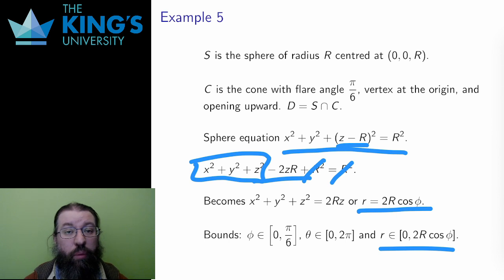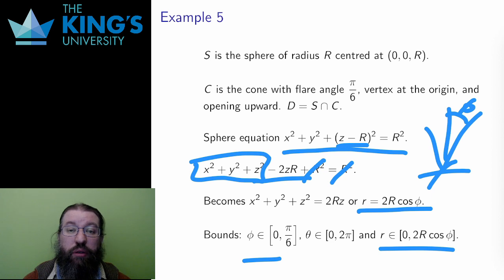Then the cone. Thankfully, the cone matches up very nicely with spherical coordinates. A cone with its vertex at the origin pointing up is precisely the figure where φ is constant. I said the flare angle was π over 6, so I can take φ from 0, starting at the z axis, going down to π over 6. The shape goes all around the horizontal circle, so theta from 0 to 2π is still good. This gives me three bounds I need to set up the integral.